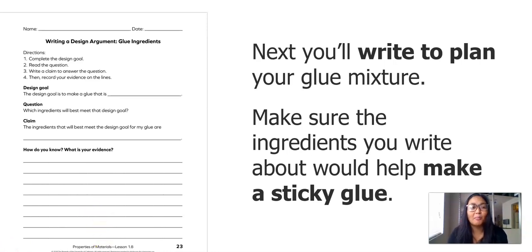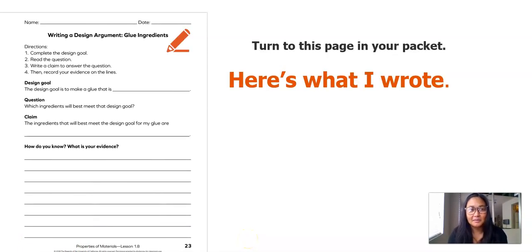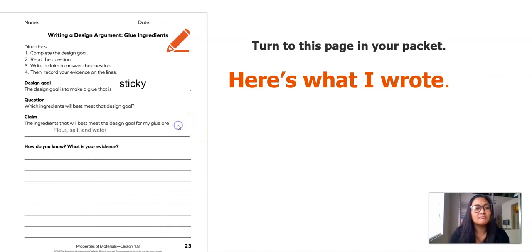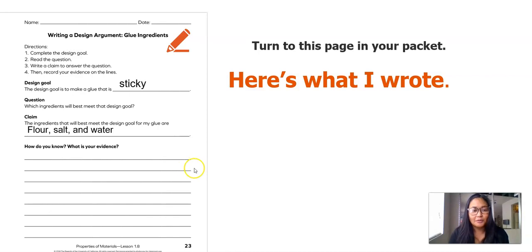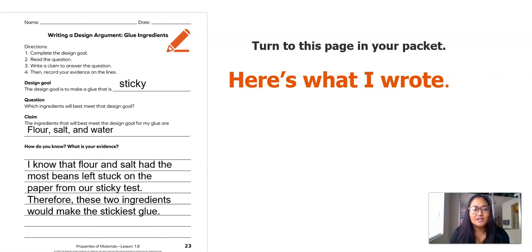I'm going to give you some time to write about your ideas, write your claim, and especially write about your evidence. Here's what I wrote. For my design goal: the design goal is to make a glue that is sticky. For my claim: the ingredients that will best meet the design goal for my glue are flour, salt, and water mixed all together. And for my evidence: I know that flour and salt had the most beans left stuck on the paper from our sticky test. Therefore, these two ingredients would make the stickiest glue.